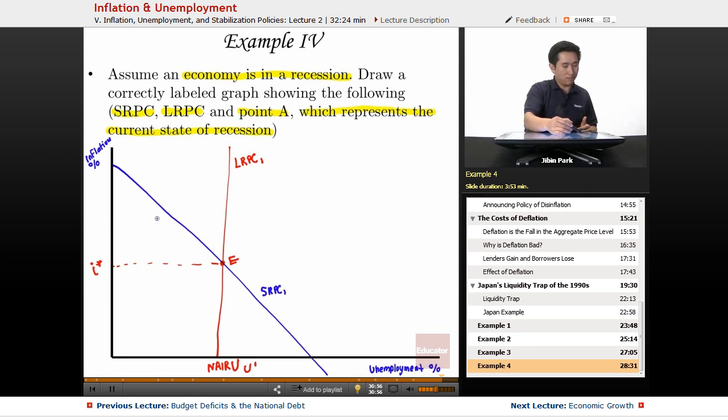an inflationary gap more so than a recessionary. You're gonna have low unemployment - that's definitely not a recession - and you have high inflation, so that definitely wouldn't be the case. So you don't go to the left side; obviously it'd be the right side.